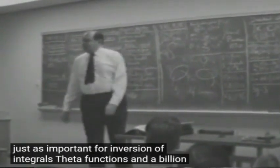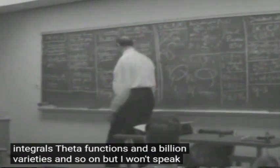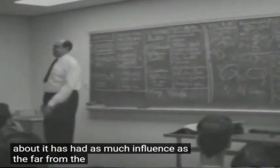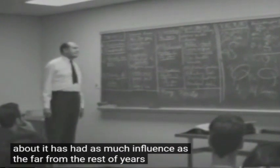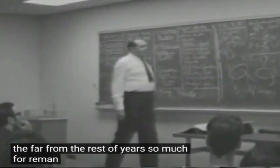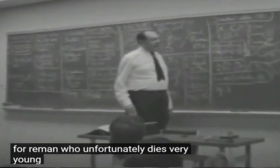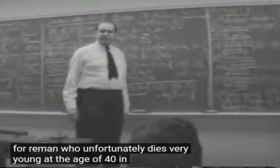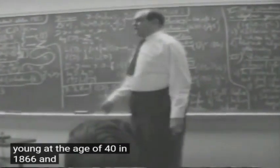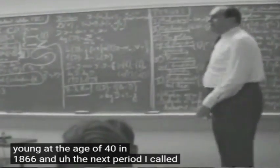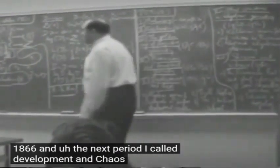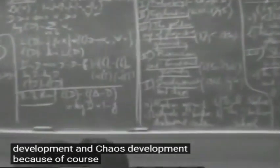It has had as much influence as the first half on the rest of mathematics. So much for Riemann, who unfortunately dies very young at the age of 40 in 1866. And the next period I call development and chaos.